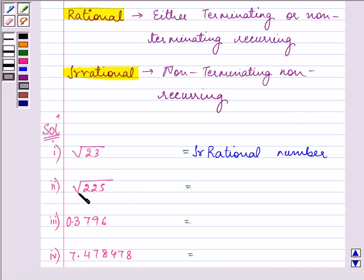Proceeding on to root 225, we know that the square root of 225 is 15, and since 15 is a real number, that means the answer to this part is that it is a rational number.